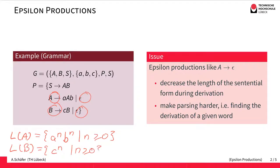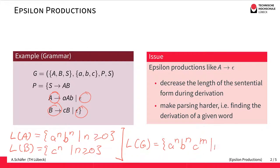From B we have an arbitrary number of C's — n C's — and this might also be zero, so the empty word is possible as well. Now that we have established what we can derive from A and from B, we can also see the language of grammar G: the set of all words with n A's followed by n B's and then an arbitrary number of C's.